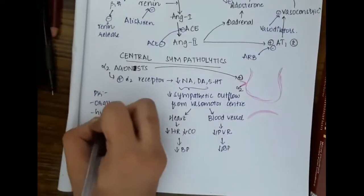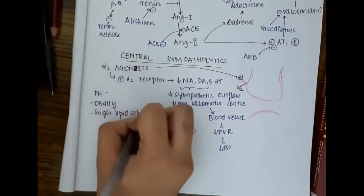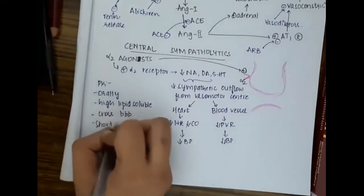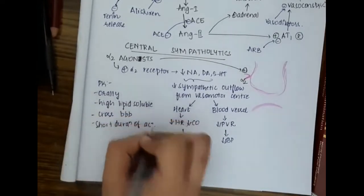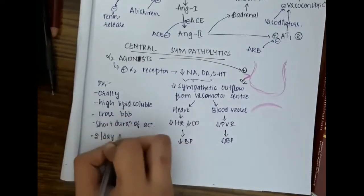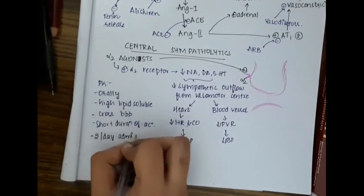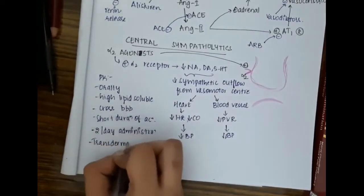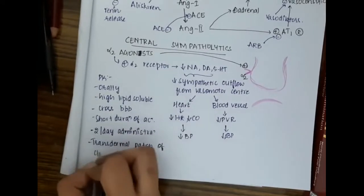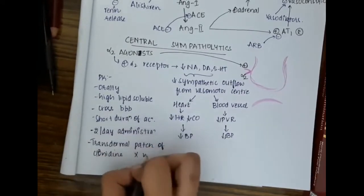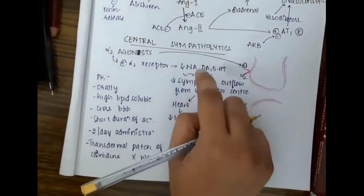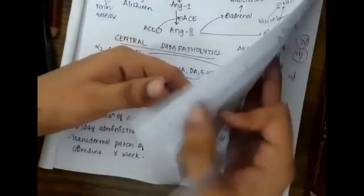Regarding pharmacokinetics, these alpha-2 agonists are orally administered and highly lipid soluble. They cross the blood-brain barrier, have a shorter duration of action, and are given twice per day. The transdermal patch of clonidine is given once per week.